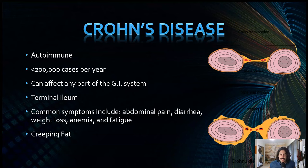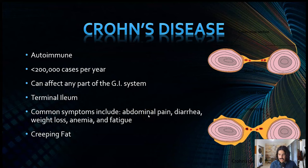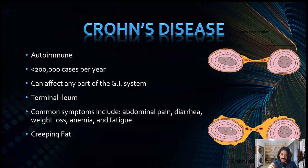Crohn's disease is an autoimmune inflammatory bowel disease of the intestines, with fewer than 200,000 cases a year. It can affect any part of the GI system but very frequently starts with inflammation at the terminal ileum or the ileocecal junction. You can have pancolitis — your entire colon swollen. Common symptoms include abdominal pain, diarrhea, weight loss, anemia, and fatigue. One finding you can see with ultrasound is bowel wall thickening and what's called creeping fat — echogenic fat circumferentially wrapping around the colon — which is suggestive of Crohn's disease. You can't diagnose it with ultrasound, but you can suggest it.